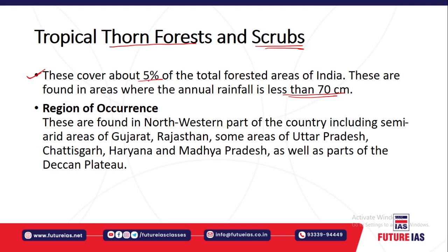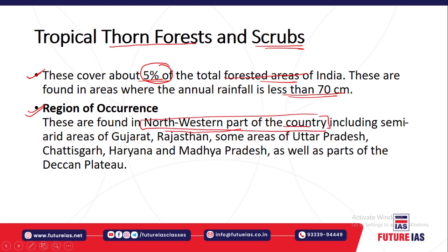Tropical thorn forests and scrubs cover 5% of the total forested area of the country. They are found basically in the north-western part of the country, specifically in the arid and semi-arid regions.